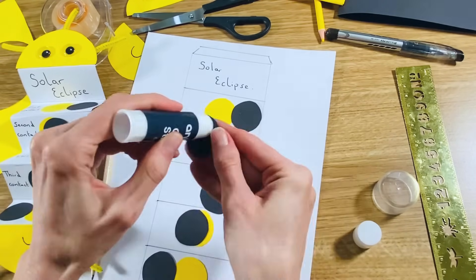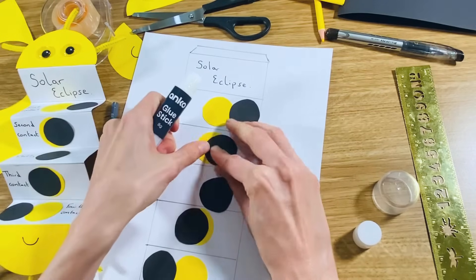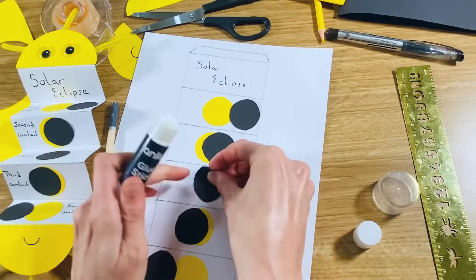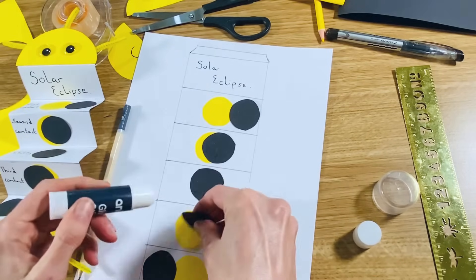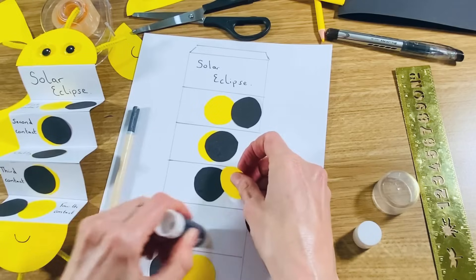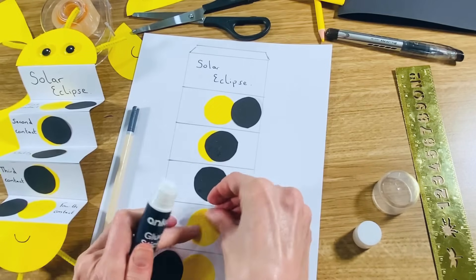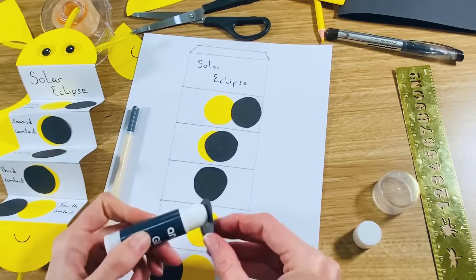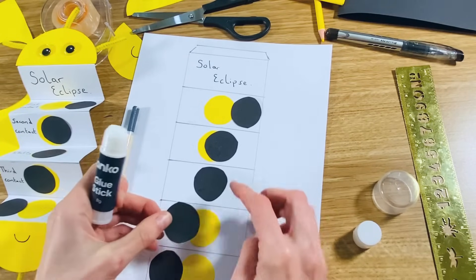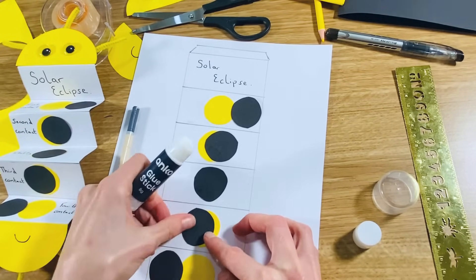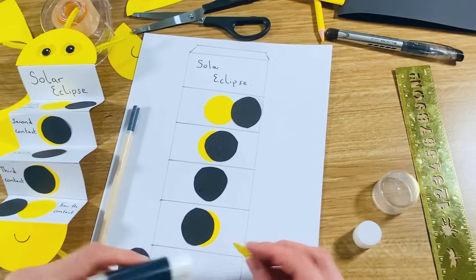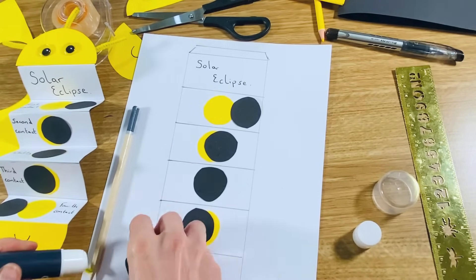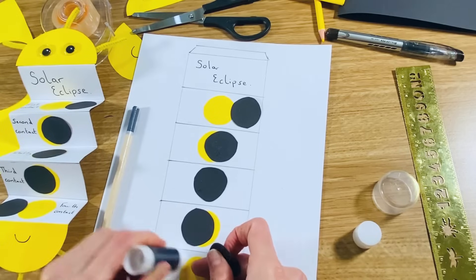Sun, moon. So the sun is still there on the third stage, we just can't see it, it's completely hidden. And then last of all, got the moon moving away from the sun.